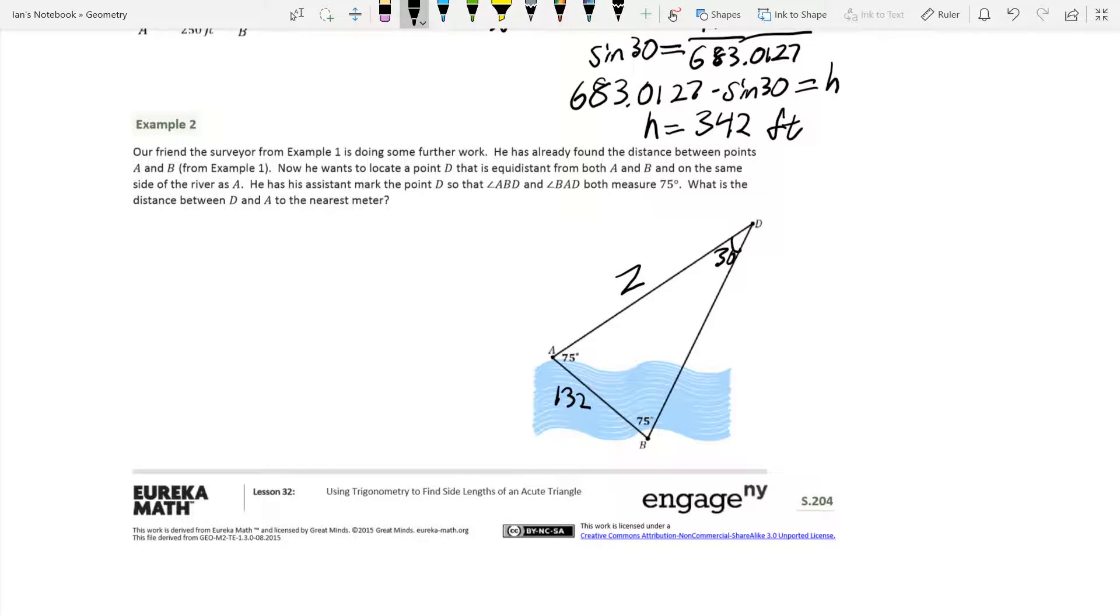Now we just need to set up exactly what we set up before. We're going to go 132 divided by the sine of 30 is equal to Z divided by the sine of 75. That's a 7, guys. Trust me. Now to solve for Z, we just multiply both sides by the sine of 75, and we get 132 sine of 75 divided by the sine of 30 is equal to Z.